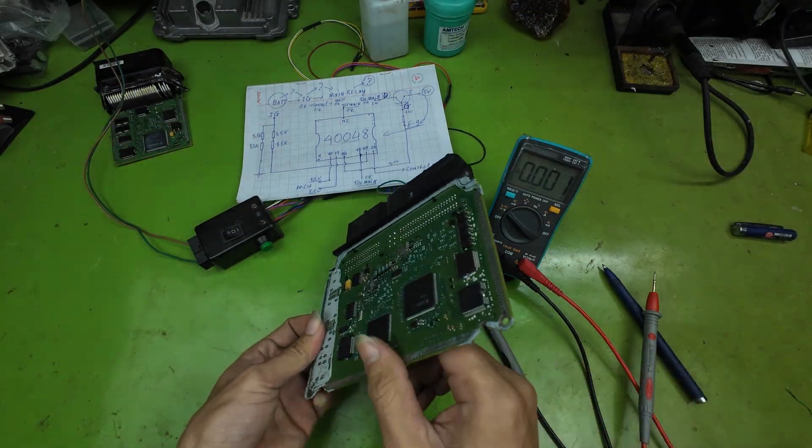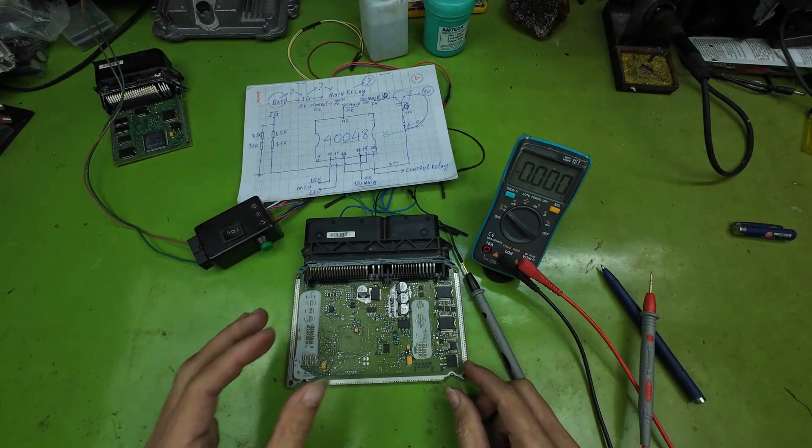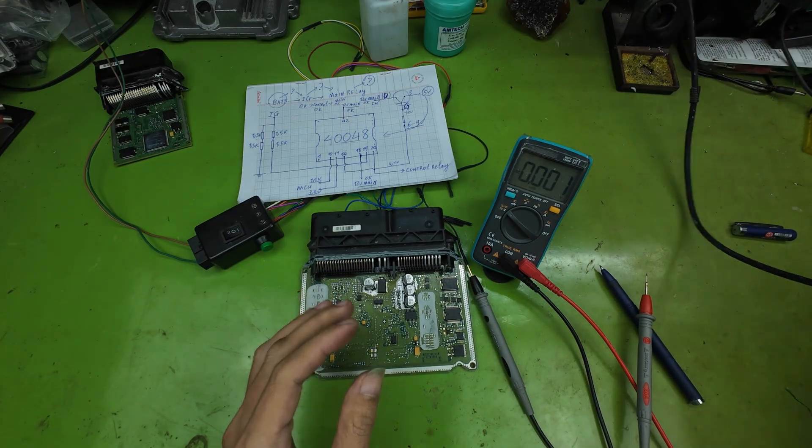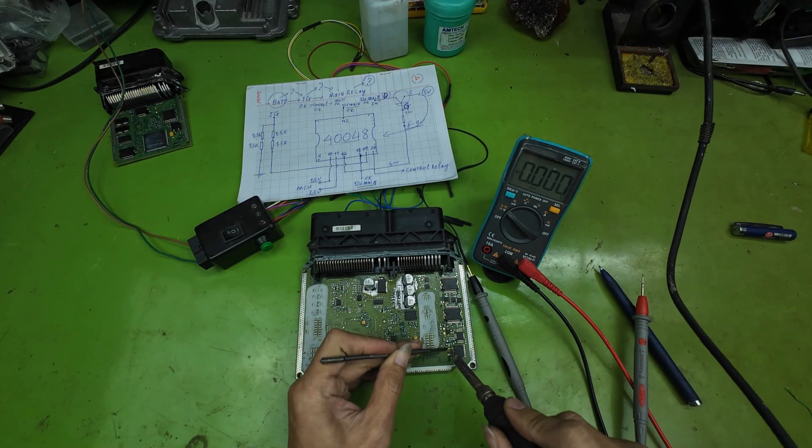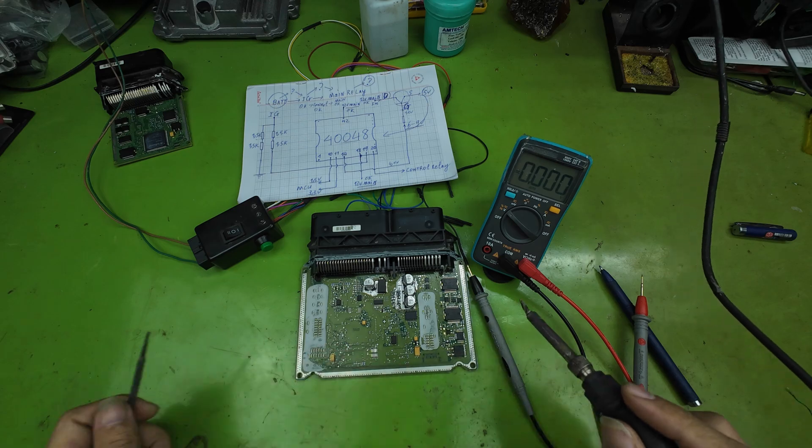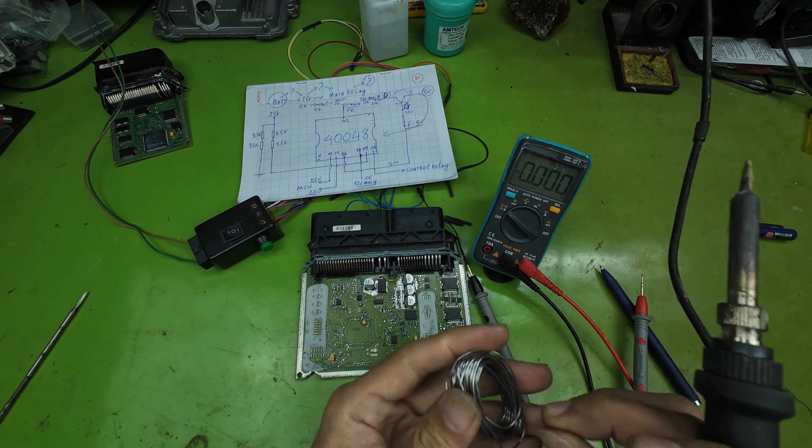I will lift the G-pin of the MOSFET off the main board to check whether the fault is caused by the MOSFET being shorted, or if the IC 40048 is faulty and causing the voltage drop.